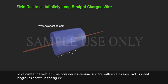To calculate the field at P, we consider a Gaussian surface with wire as axis, radius R and length L as shown in the figure.